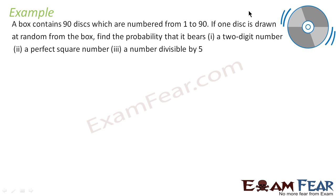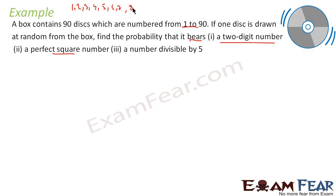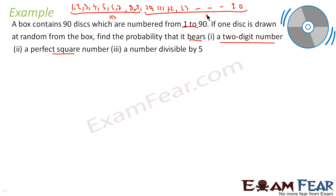A box contains 90 disks numbered 1 to 90. If one disk is drawn from this box, find the probability that it bears: a two-digit number, a perfect square number, and a number divisible by 5. For the first part — two-digit number — from 1 to 90, numbers 1 to 9 are one-digit and numbers 10 to 90 are two-digit.